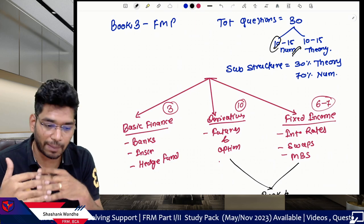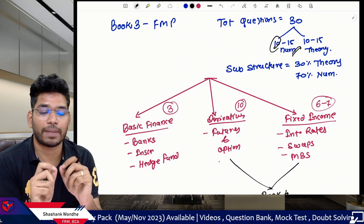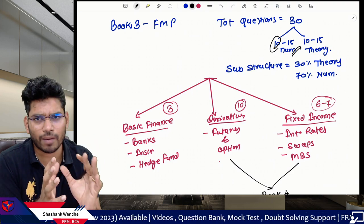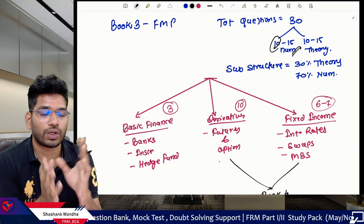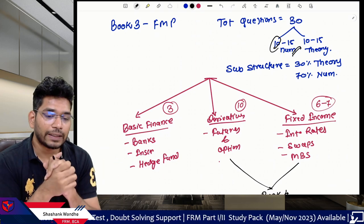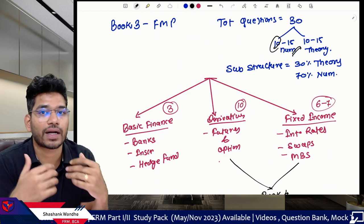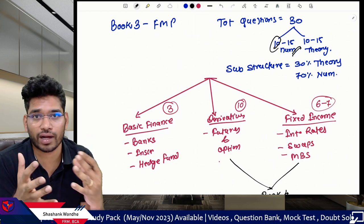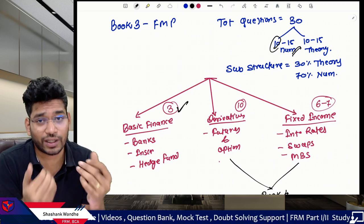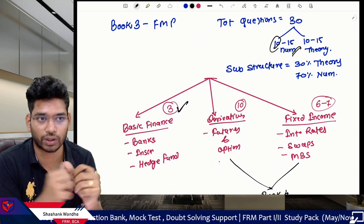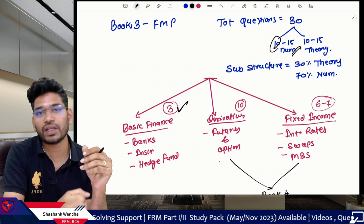We can divide this subject into three parts. The first part covers the very basics of finance — banking, insurance, and hedge fund. The second part covers the basics of derivatives — futures, options, and forwards — with approximately 10 topics. The third part is the fixed income area covering interest rate swaps, MBS, and so on, with approximately six to seven topics.